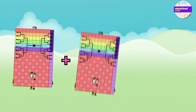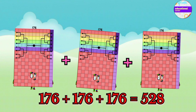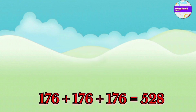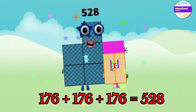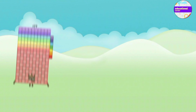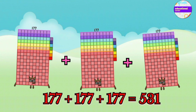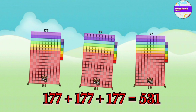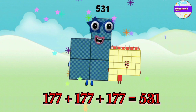176 plus 176 plus 176 equals 528. 177 plus 177 plus 177 equals 531.